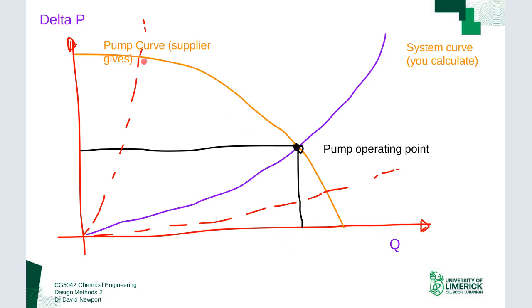We use the pump curve to determine the operating point. The pump curve is a pressure-flow curve that is produced by the supplier — this is something the manufacturer gives you. You plot this curve with your system curve, and where the two intersect gives you your pump operating point. This particular pump has a characteristic curve for a centrifugal pump, which is the workhorse of the process industry. The intersection gives the flow rate and the pressure rise experienced in the system.